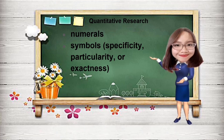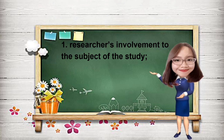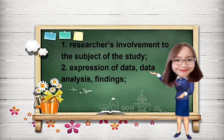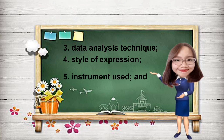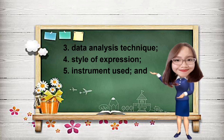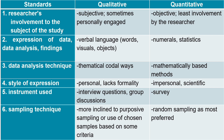Now, how do you think quantitative research differs from qualitative research in terms of the following standards? Number one, researchers' involvement to the subject of the study. Number two, expression of data, data analysis, and findings. Number three, data analysis technique. Number four, style of expression. Number five, instrument used — the tools researchers use to gather important data. And number six, sampling technique. Let me discuss these differences using this table.